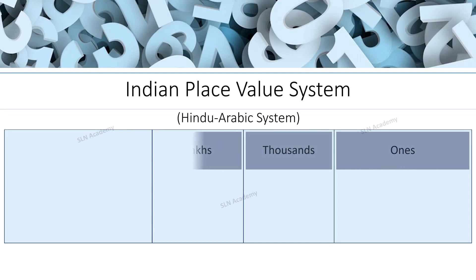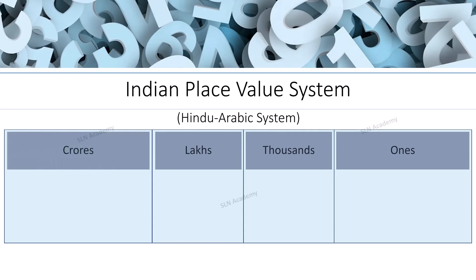We use commas to separate these periods. The periods are ones, thousands, lakhs, and crores. The ones period is divided into ones, tens, and hundreds.